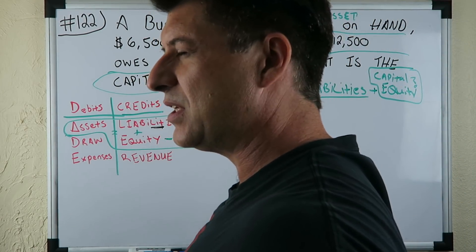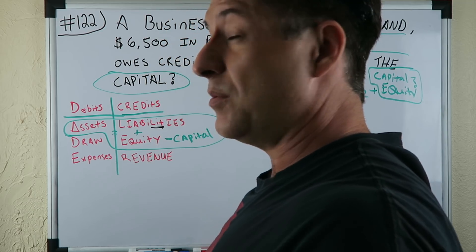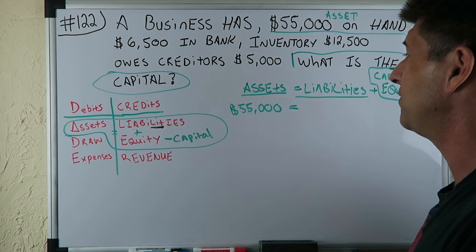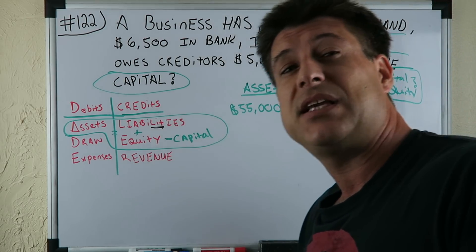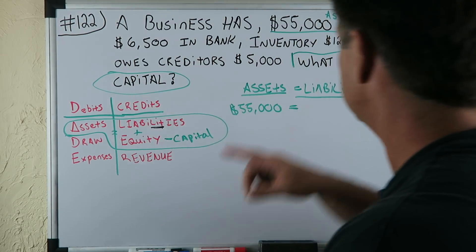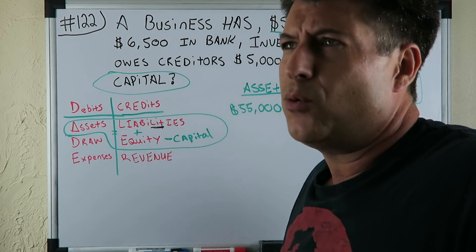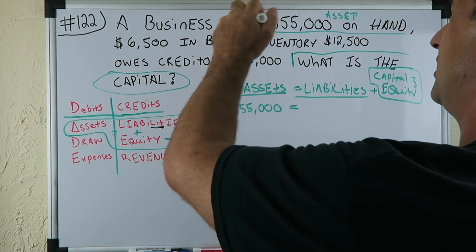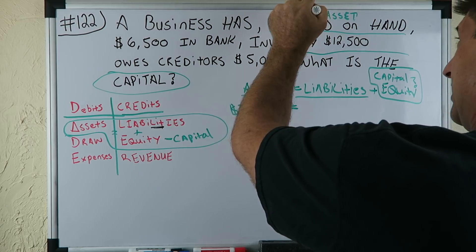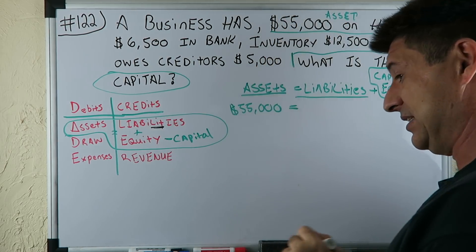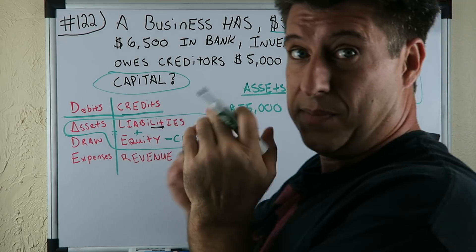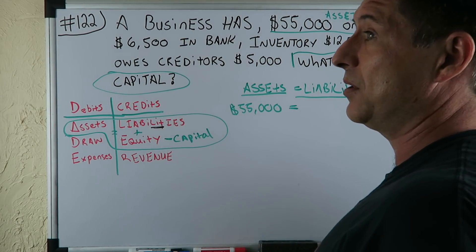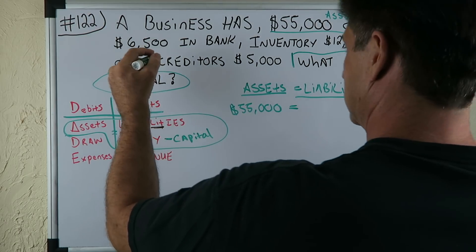For our purposes, $6,500 in bank is an asset — something that gives us a future economic benefit. Cash on hand definitely provides an economic benefit since we have it in hand, and the bank account provides an economic benefit in the future as well. So that's an asset taken care of. Inventory of $12,500 — let's say we have a widget sitting in our inventory. It's sitting in our business and it's going to provide an economic benefit because we're going to sell it for hopefully more than it's worth. So inventory is an asset as well — $12,500.